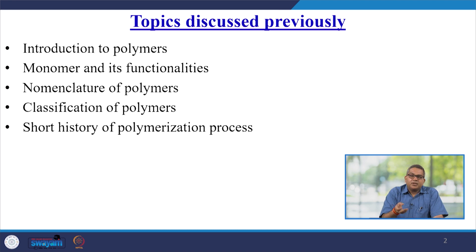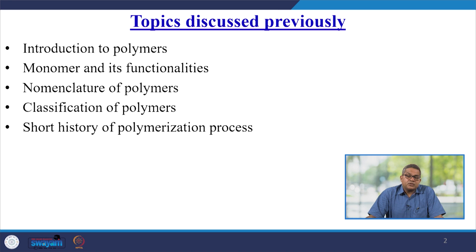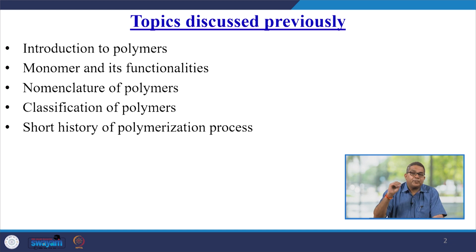We discussed their functionality, covalency, and bonding structure. Then we discussed the different nomenclature schemes of polymers, because in due course of time you will find so many different nomenclatures. We also discussed the different classification streams of polymers — how we can classify based on source, based on the polymerization process, based on the chemistry. Then we discussed the short history of the polymerization process, because it is very important to know how this polymerization process evolved over the period of time.